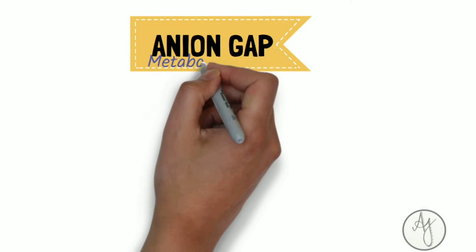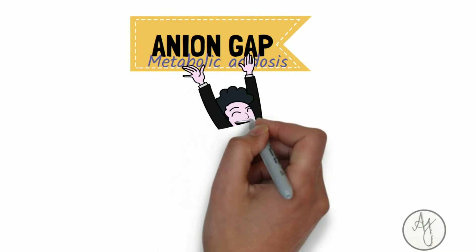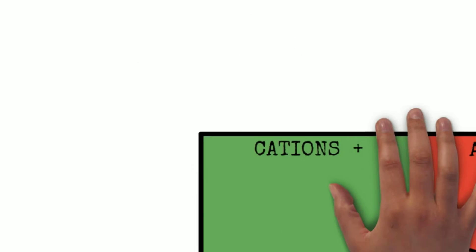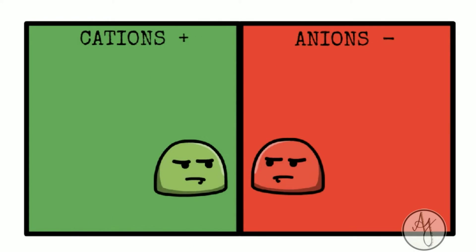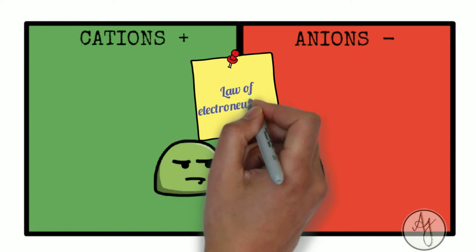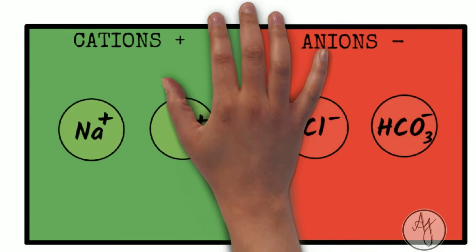Anion gap is a very important diagnostic tool when looking at metabolic acidosis. It is basically the level of cations, which are the positively charged ions, versus anions, which are the negatively charged ions in the serum. Our body follows the law of electroneutrality, meaning in all body compartments the number of anions and cations should be equal.